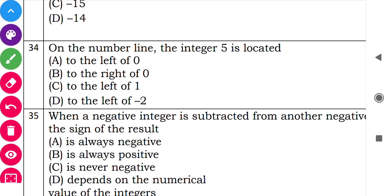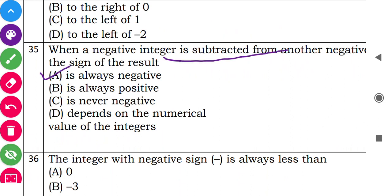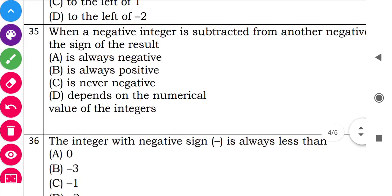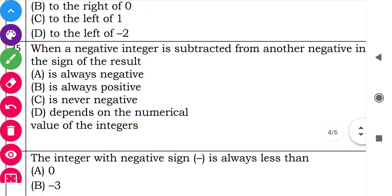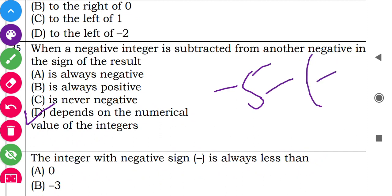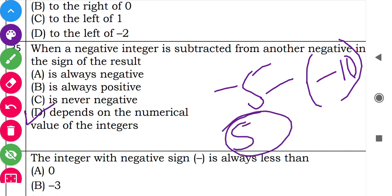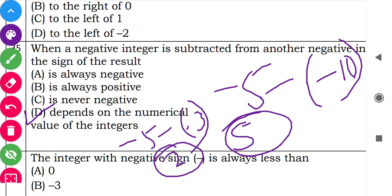Question 35: 'When a negative integer is subtracted from another negative integer, the sign of the result is...' For example, minus 5 minus minus 10 equals minus 5 plus 10 equals positive 5. But minus 5 minus minus 3 equals minus 5 plus 3 equals minus 2. So the sign depends on the numerical value of the integers.